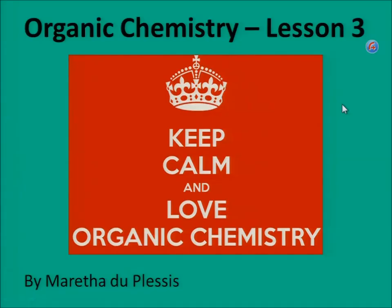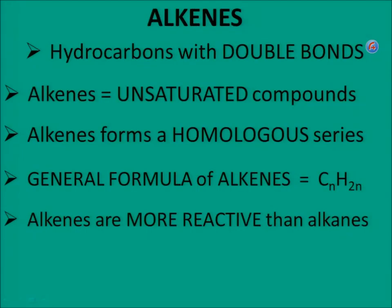Welcome to organic chemistry lesson 3: Alkenes. Alkenes are hydrocarbons with double bonds. They are unsaturated carbons, form a homology series, and there is a general formula for alkenes — just as for alkanes, but now it is CnH2n.